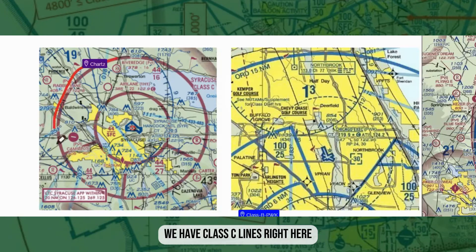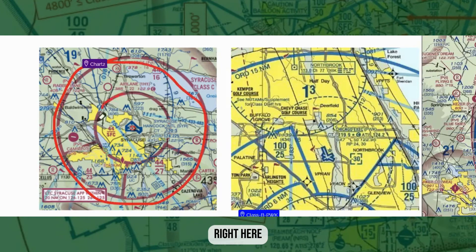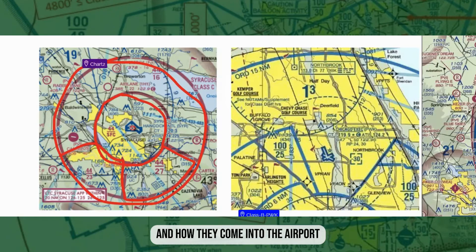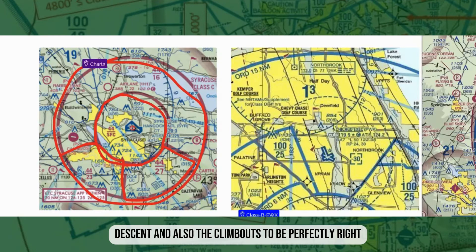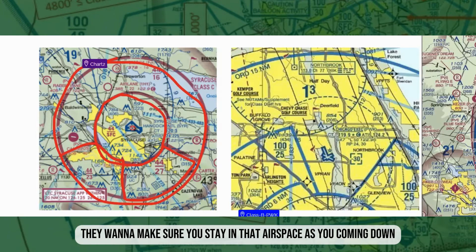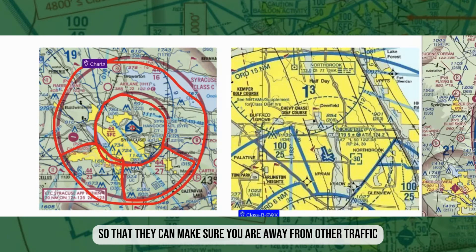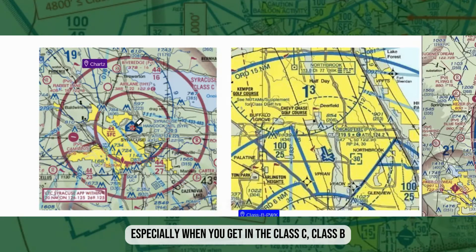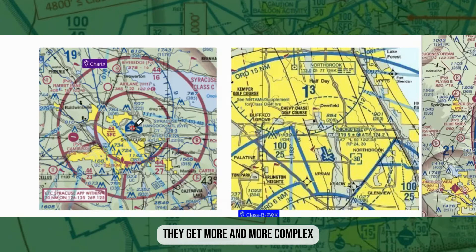In this first example we have Class C lines here. The reason they're shaped like this is it's all about IFR and VFR traffic and how they come into the airport. They want the approaches, descents, and climb-outs to be right — to make sure you stay in that airspace as you're coming down so they can keep you away from other traffic. That's why they're shaped the way they are, and especially with Class C and Class B, they get more and more complex.